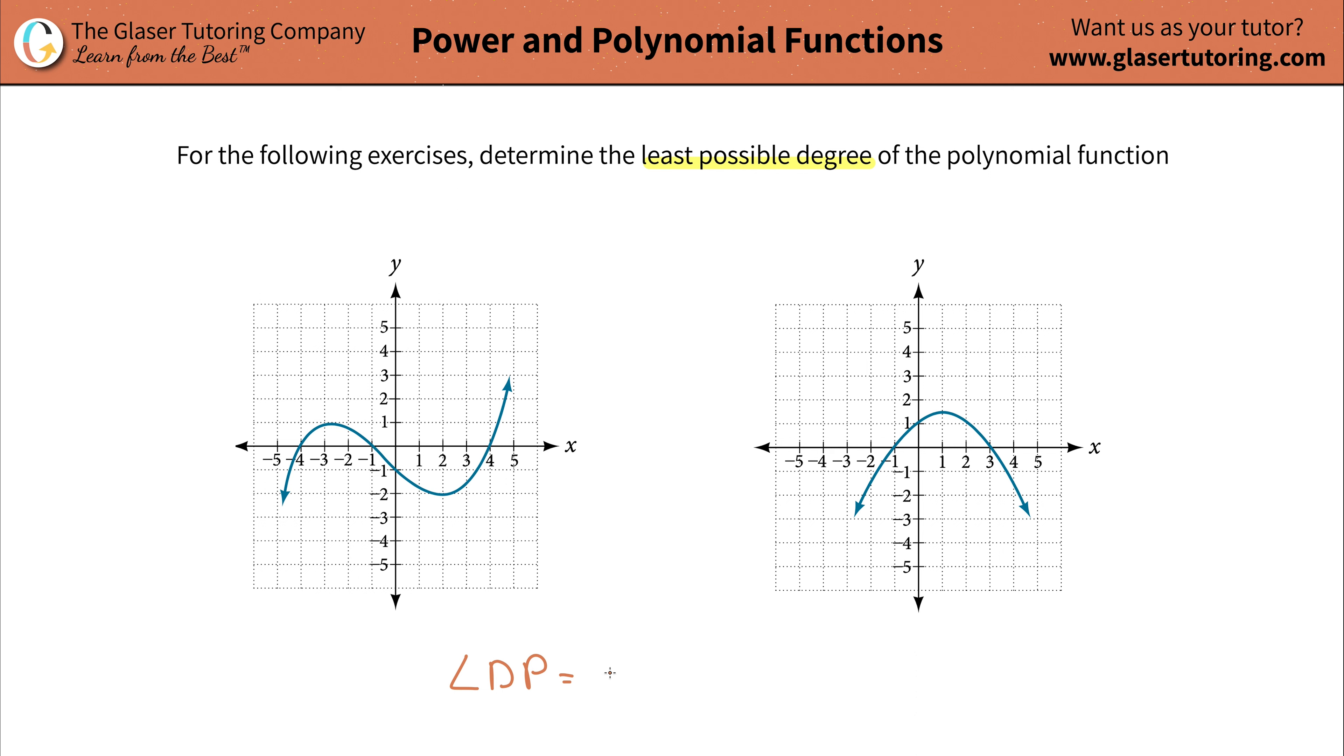Least possible degree. You can simply look at the graph, take the number of turns, the number of turns that you see on the graph, and then add one to it. That'll give you the LPD, or least possible degree of the polynomial.